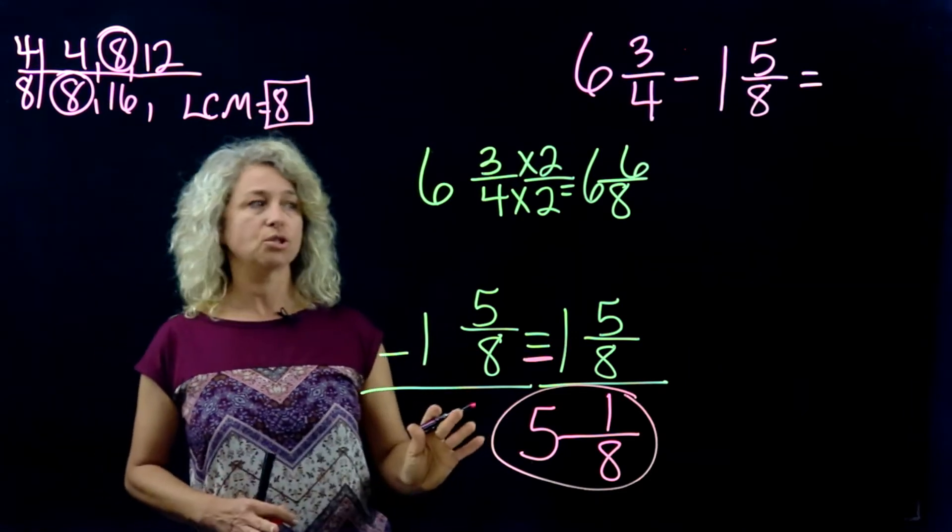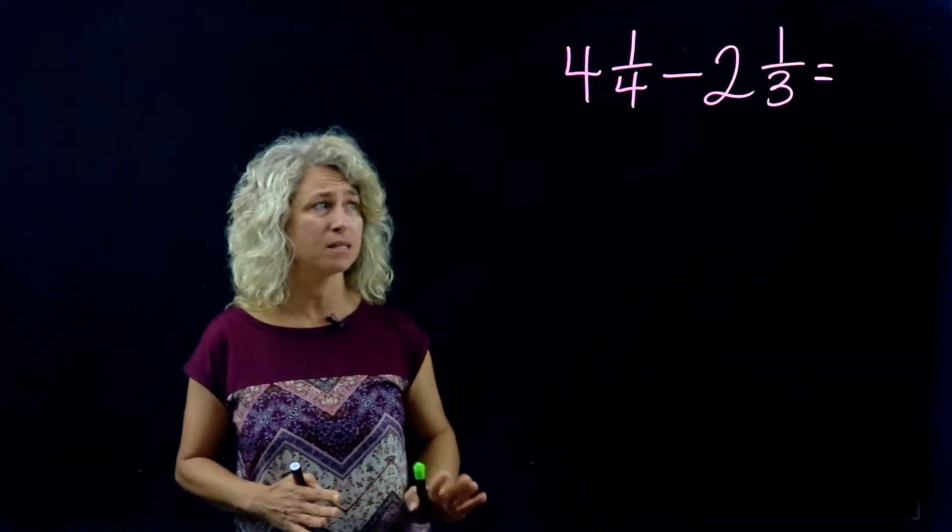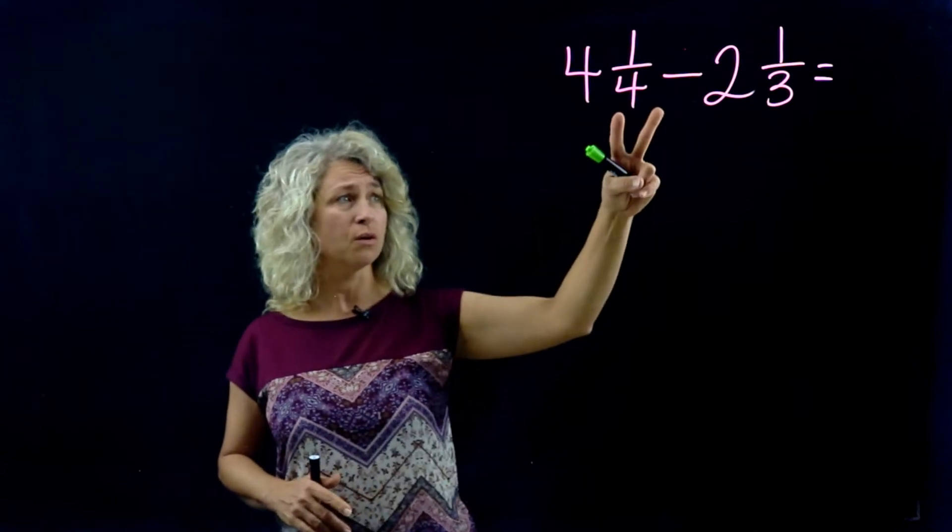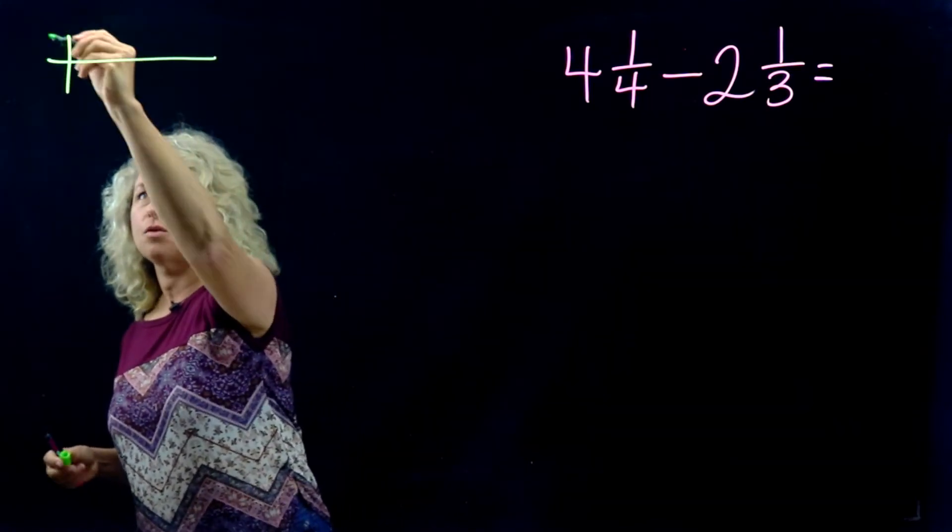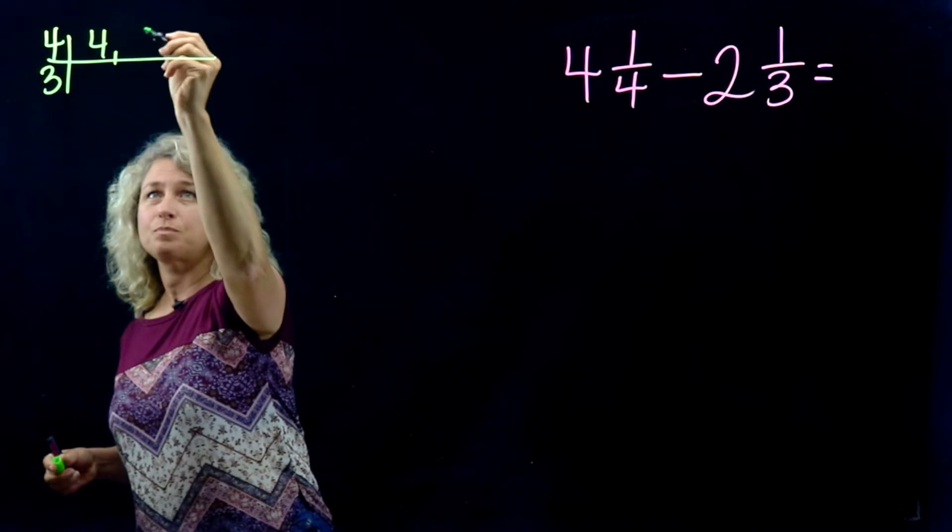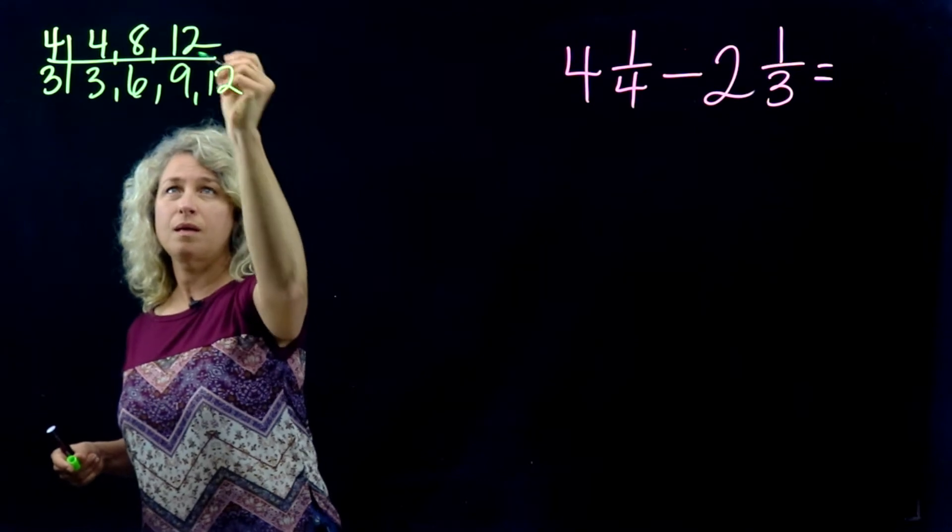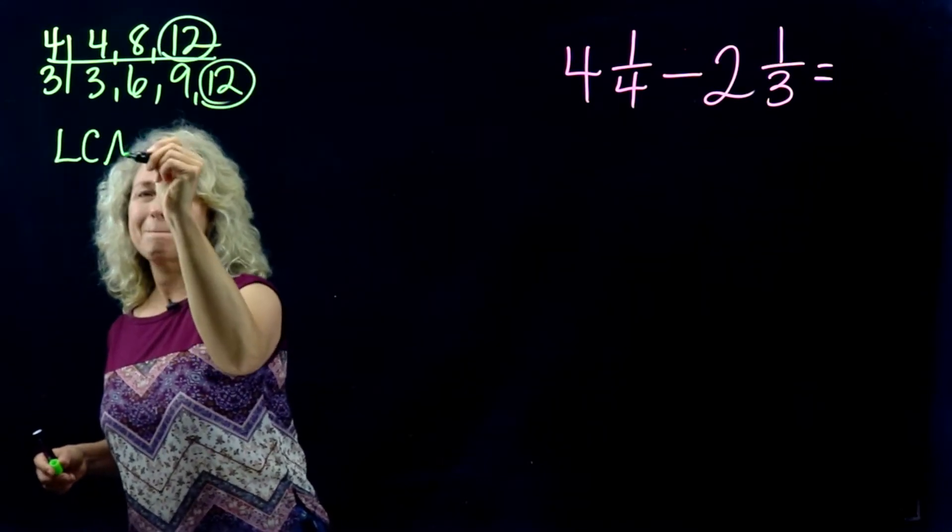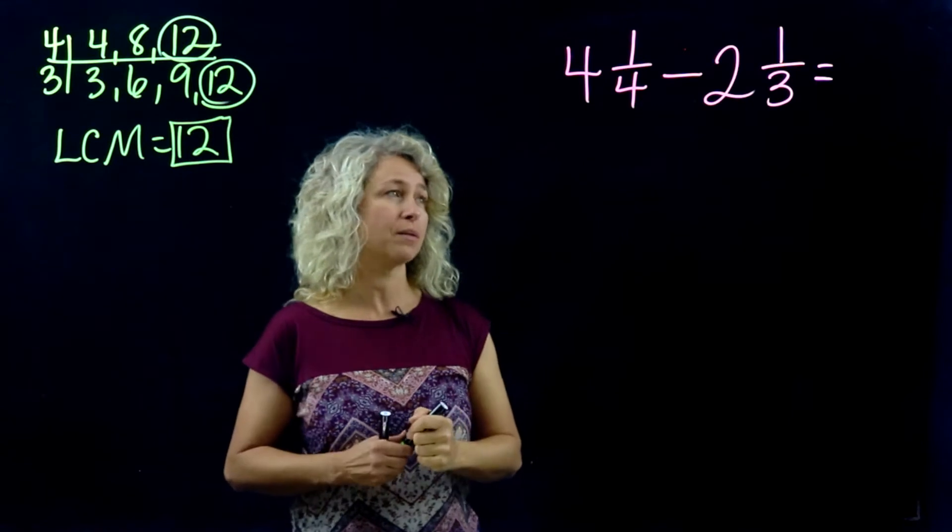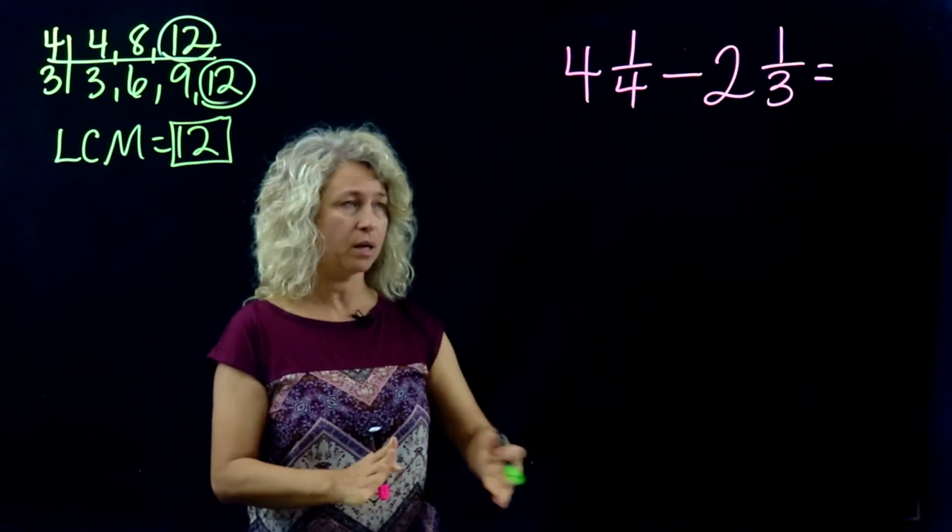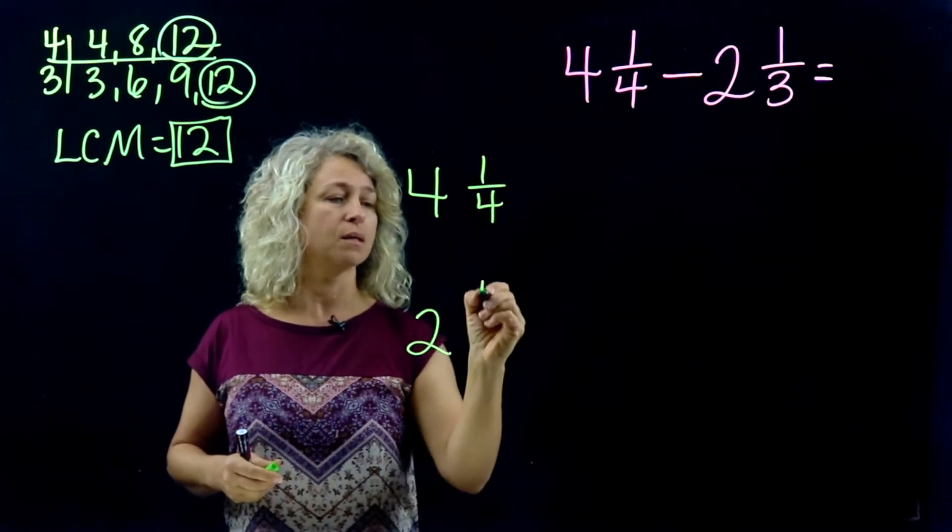Let's do another one. This example is going to be a little bit different. We'll still evaluate the denominators: four and three. We'll still need to have the LCM. Four and three, we see that 12 is our LCM. So here will be our denominator when we rewrite the problem. I'm going to rewrite it vertically: 4 1/4 minus 2 1/3.